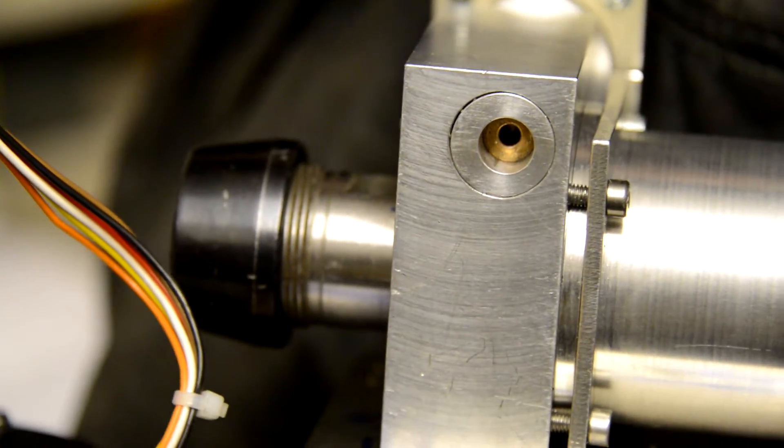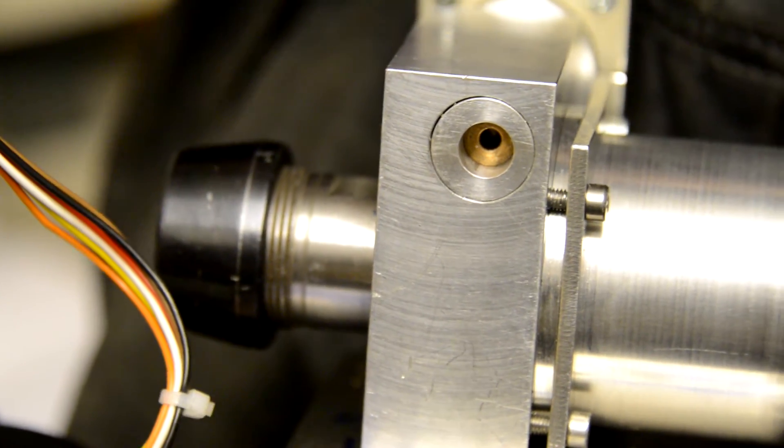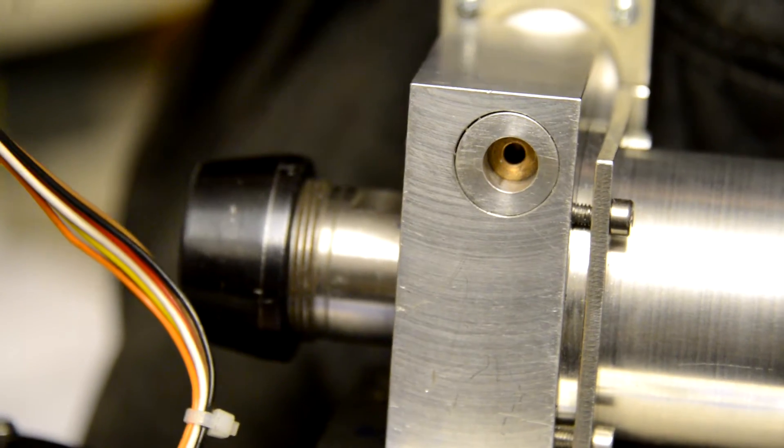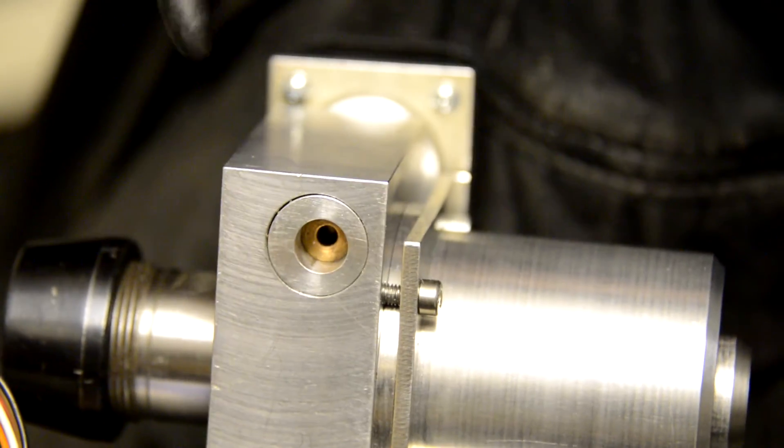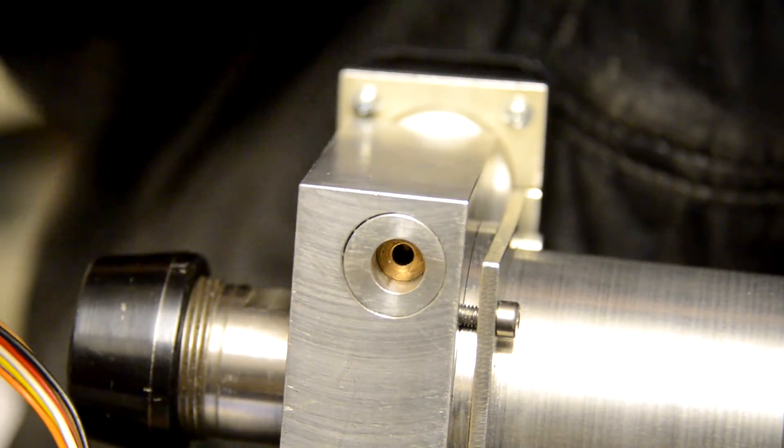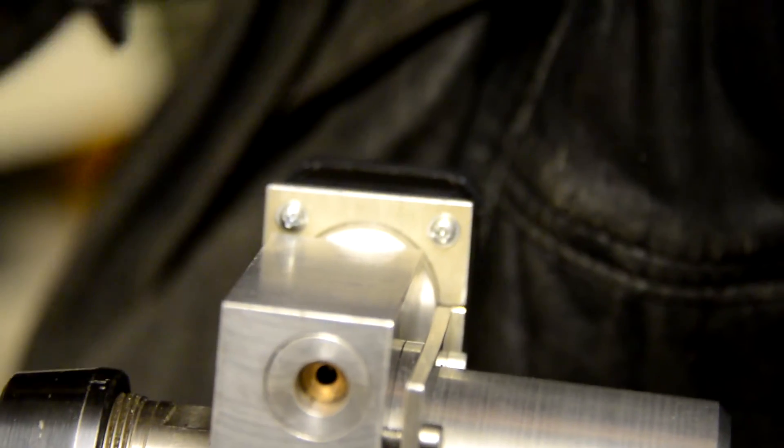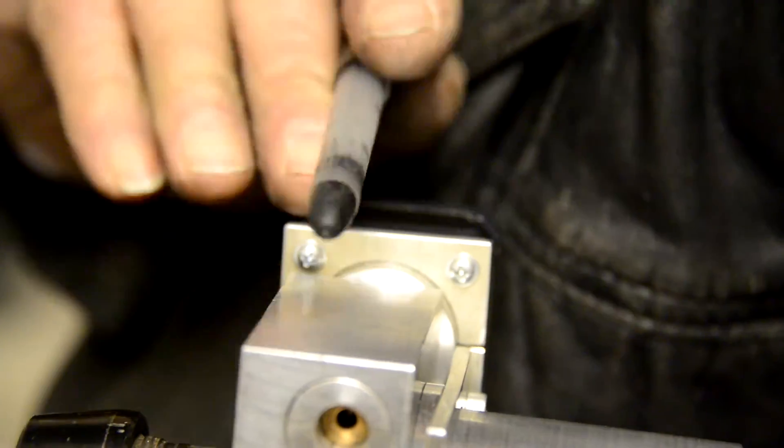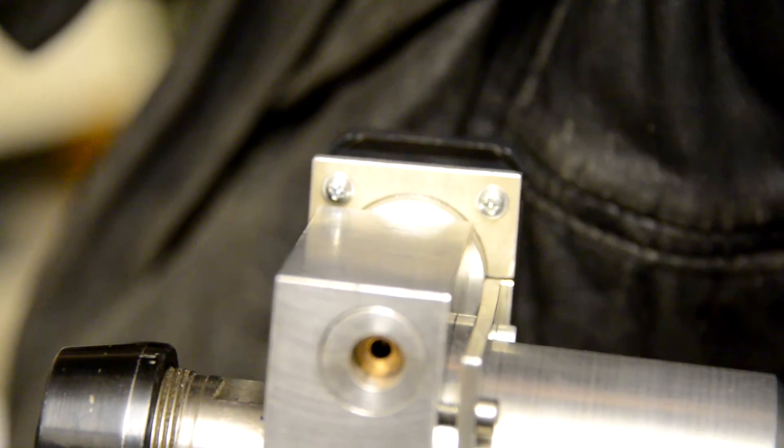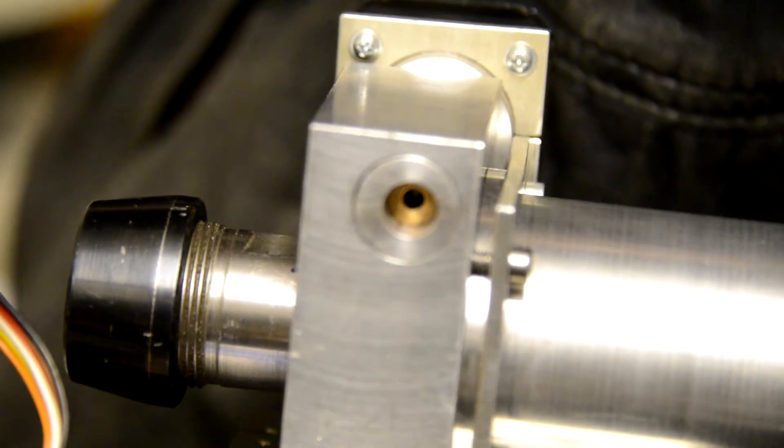Yeah, you just make sure that there's no end-float on the worm or the thrust race on the stepper motor. Support it at the end in a bush, and then the whole thing is in an eccentric that can then be rotated around to engage or disengage the worm to get you absolutely backlash free. Nice.